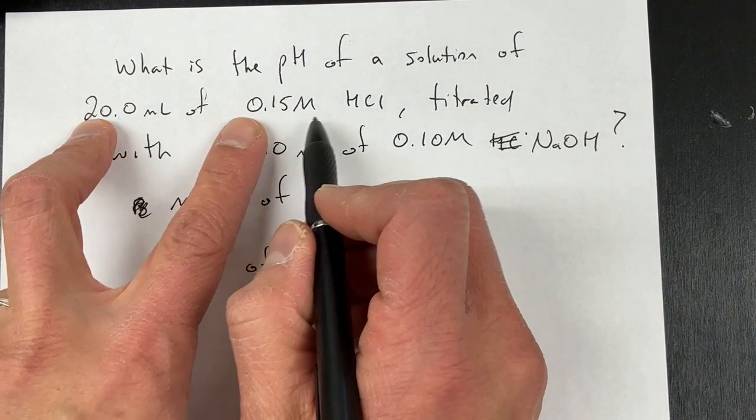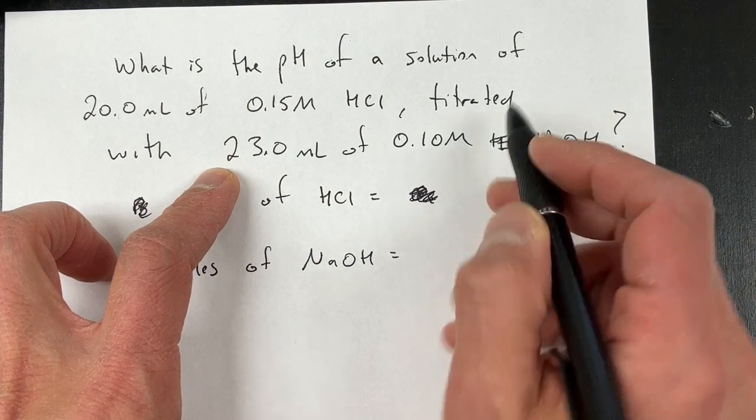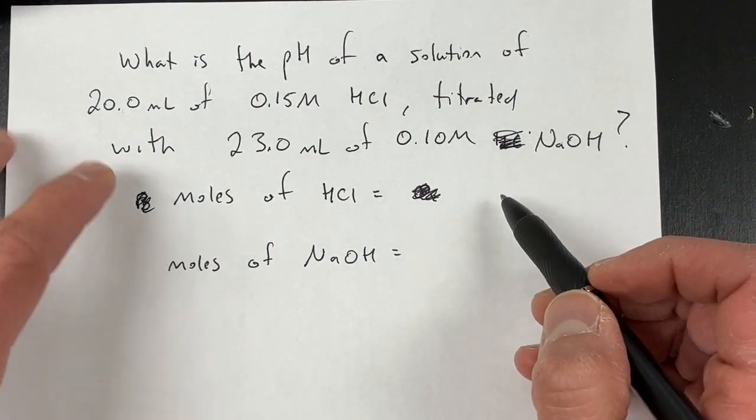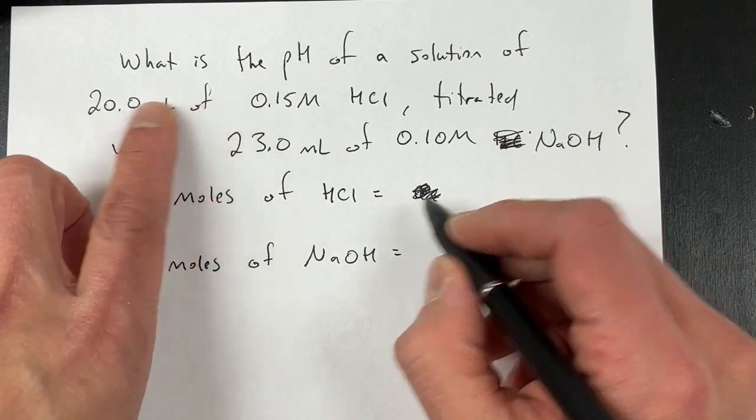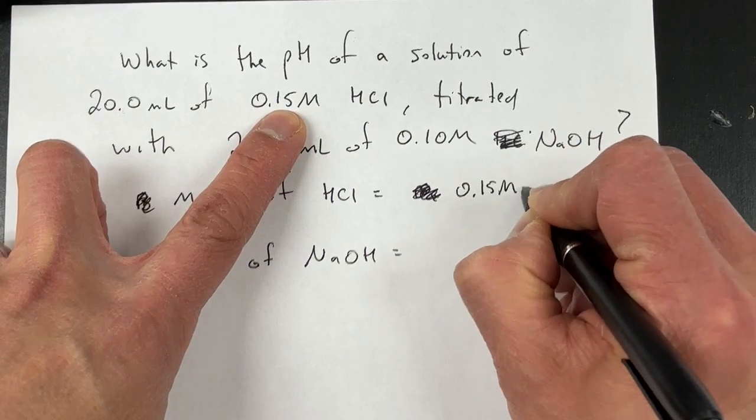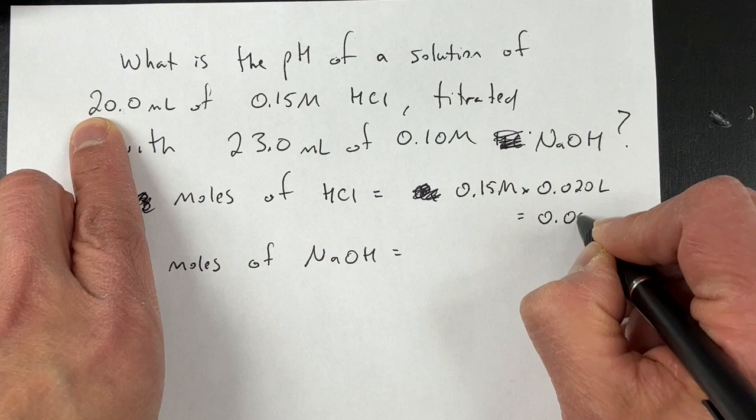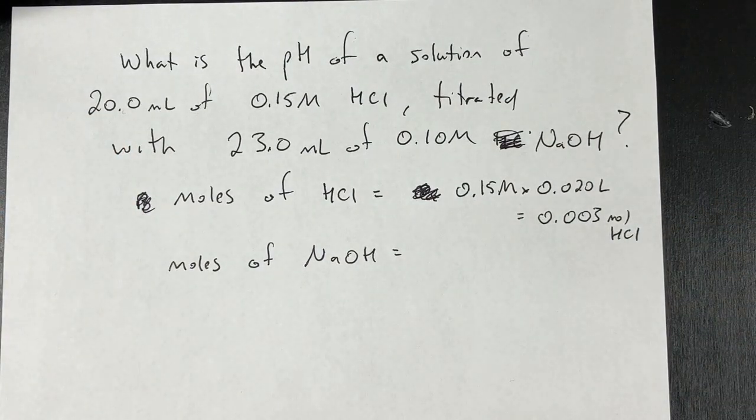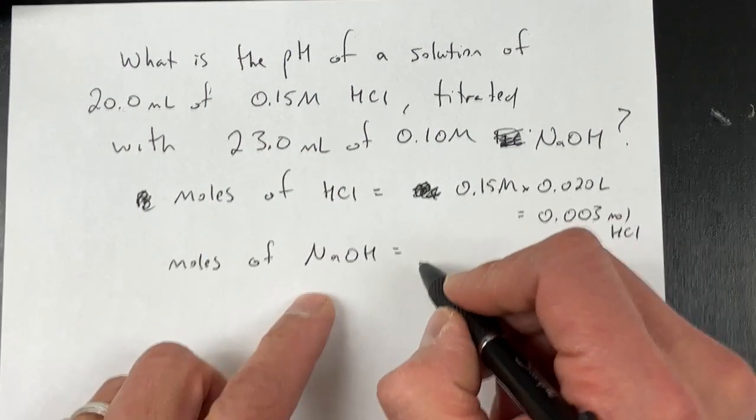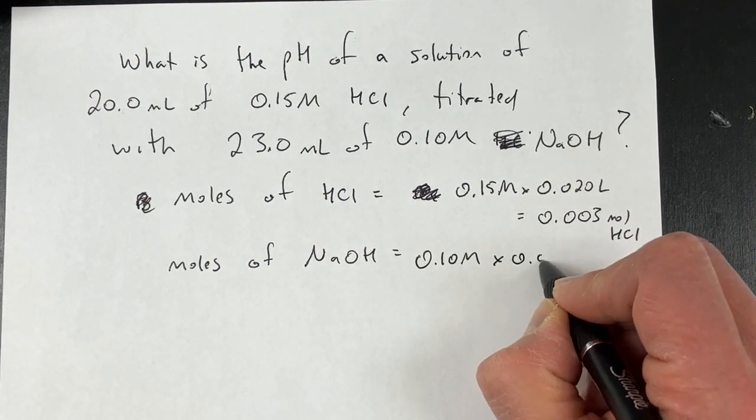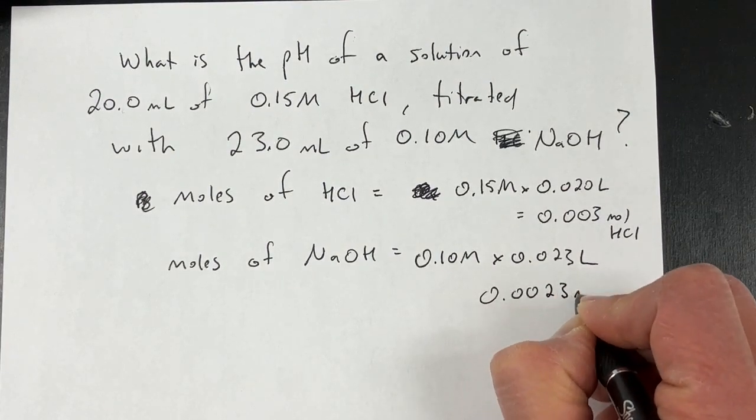So I have a solution of 0.15 molar HCl, 20 milliliters of this. I'm going to titrate it with 23 milliliters of 0.10 molar NaOH. And to go about doing this, I first want to see how the moles of each thing are related to each other. So moles of HCl, take molarity times liters, so 0.15 molar times 0.020 liters, and that gives me 0.003 moles HCl. And then my moles of NaOH, I'm going to take 23 milliliters, so 0.10 molar times 0.023 liters, and that is 0.0023 moles of NaOH.